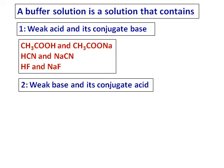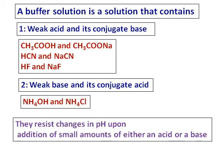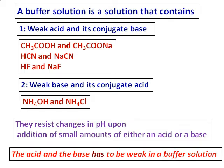A buffer solution can also have a weak base and its conjugate acid. An example is ammonium hydroxide and ammonium chloride. Buffer solutions resist the changes in pH even if you add small amounts of an acid or base into it, helping to maintain the pH when doing experiments.